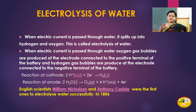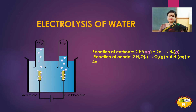English scientists William Nicholson and Anthony Carlisle were the first to electrolyze water successfully in 1806. Looking at the electrolytic cell arrangement: the electrode attached to the positive terminal of the battery is the anode, and the one attached to the negative terminal is the cathode. For electrolysis of water, a little amount of acid is added to distilled water to make it an electrolyte. Oxygen gas is generated at the anode (positive electrode) and hydrogen is liberated at the cathode (negative electrode).